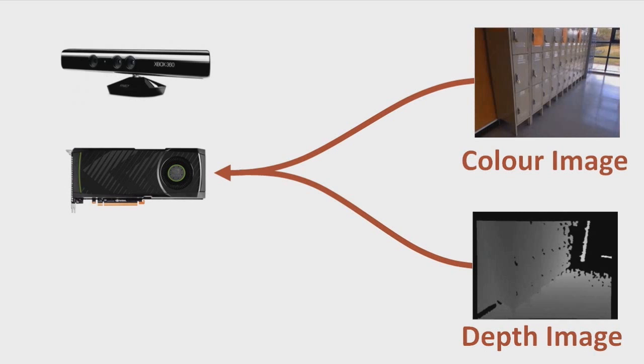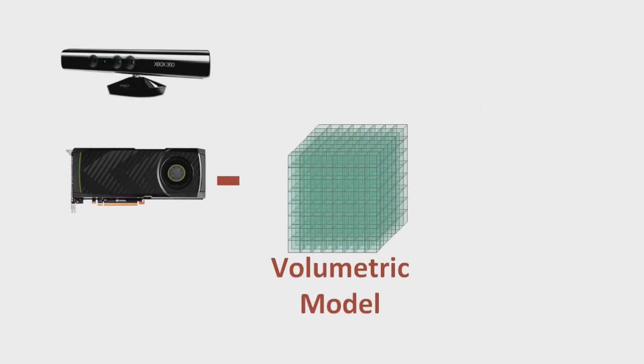The significance of Kinect Fusion was that it was the first low-cost system to create real-time dense surface models of an unknown scene. Their solution relied on the massive parallelism provided by modern graphics processing units to construct a volumetric model of the environment.